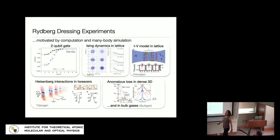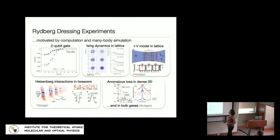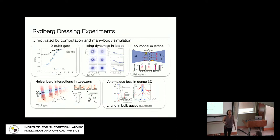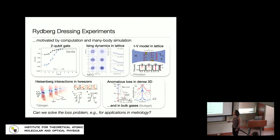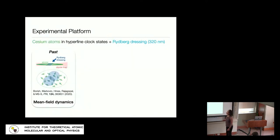Those experiments were in fairly controlled settings — two atoms in tweezers, or one- and two-dimensional arrays in lattices. There have also been experiments in dense 3D systems or bulk gases, where disappointingly the dynamics were dominated by loss processes that prevented observing coherent interactions. This loss problem is something one would like to solve if you want to work in systems with scalable particle number that are of interest for metrology. So we started looking at whether we can access coherent Rydberg-dressed interactions in the setting of a bulk gas.